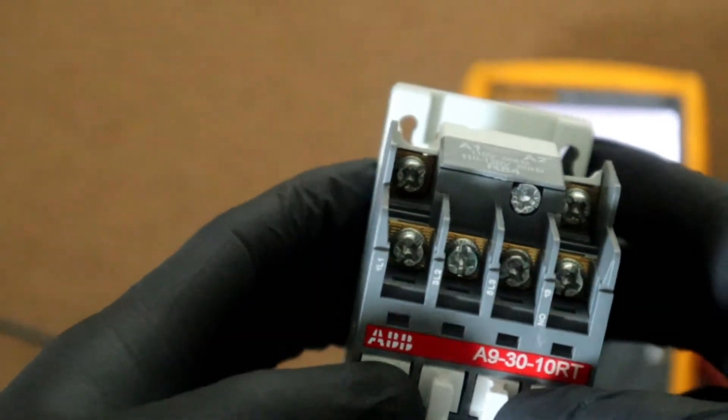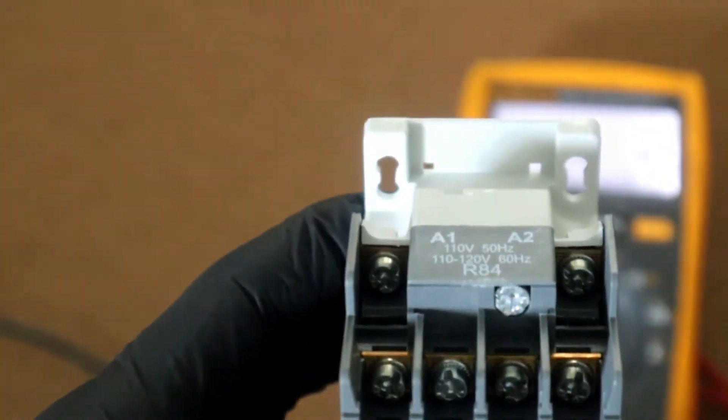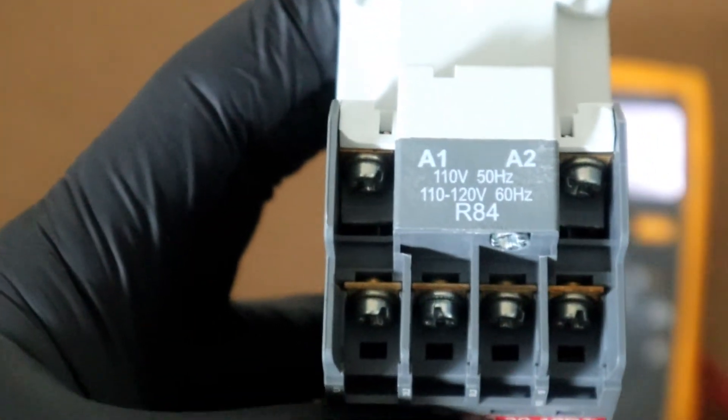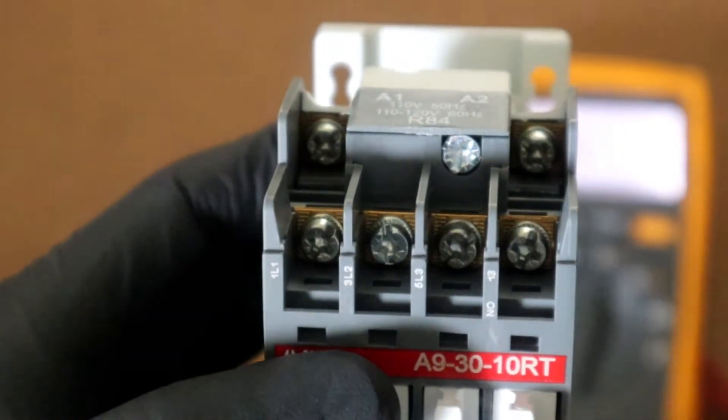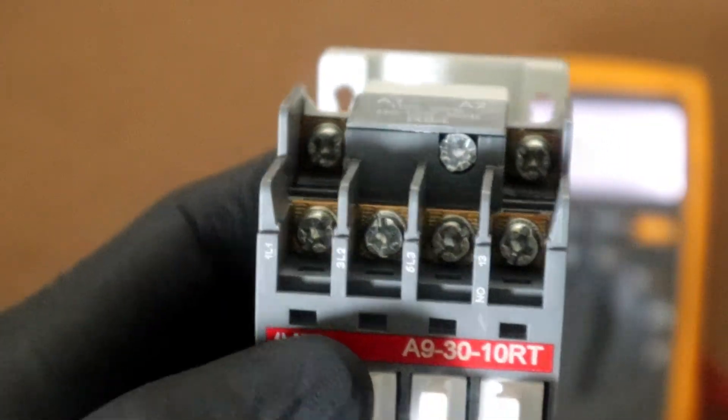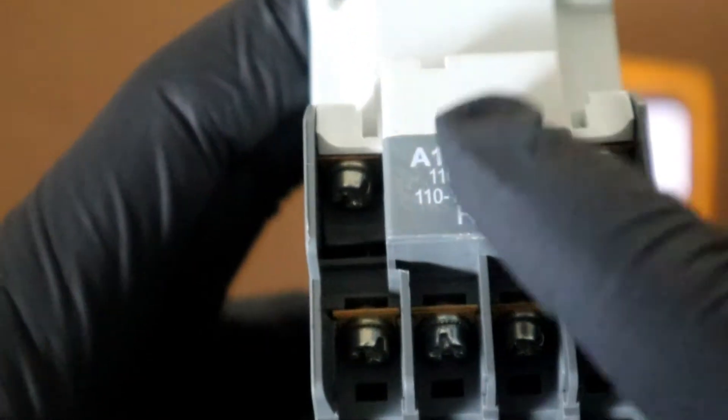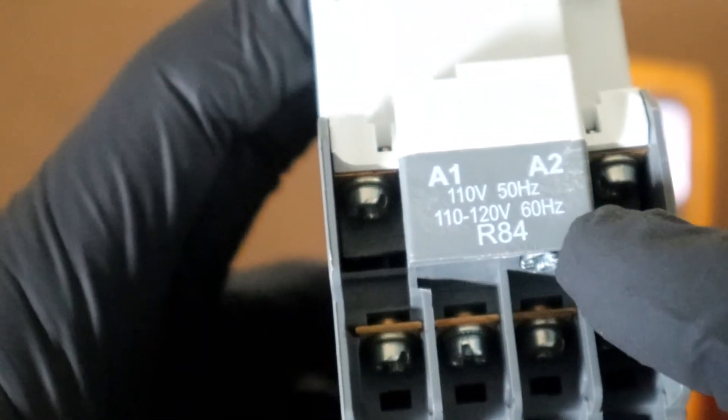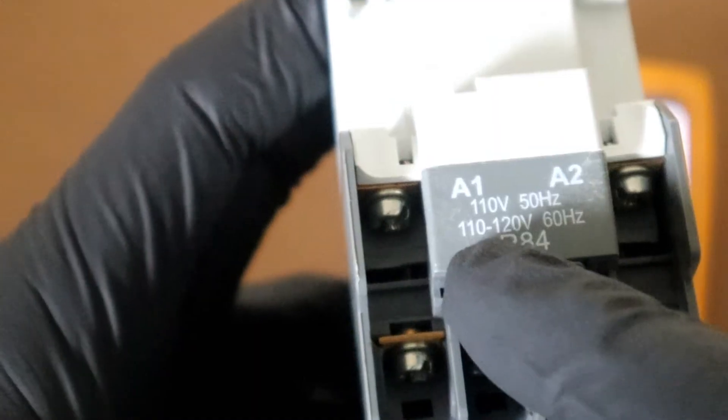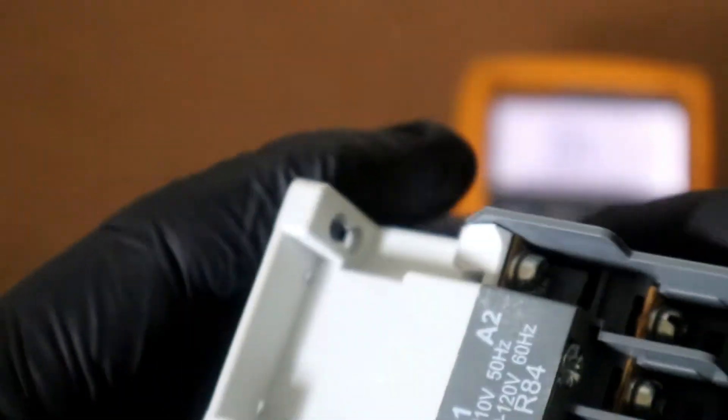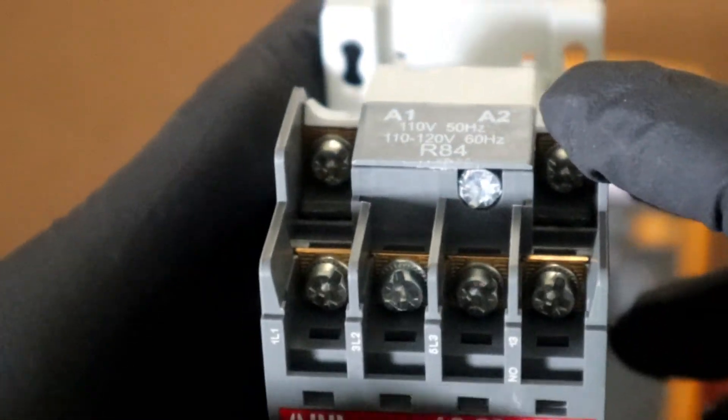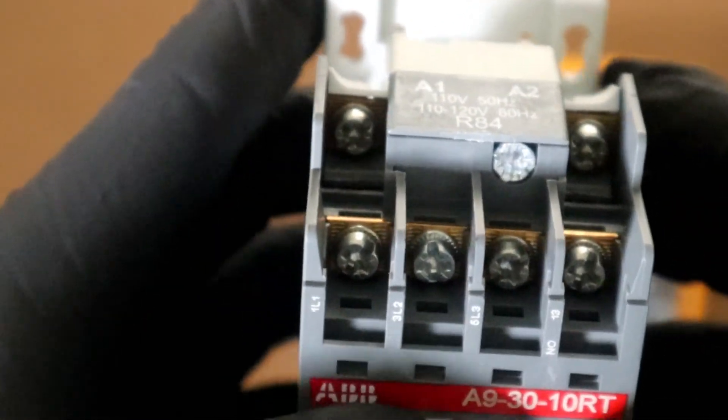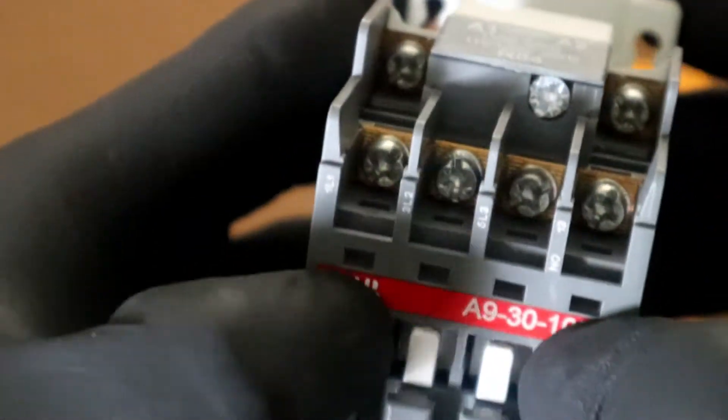The final step to conclude our contactor testing is testing the coil, A1, A2 section. The coil acts as the switching mechanism for a contactor. This coil is 110 volts 50 Hertz operated or it can be operated on 110 to 120 volts 60 Hertz. When our voltage is applied across our coil A1 to A2, there is an electromagnet inside which pulls our contact in.